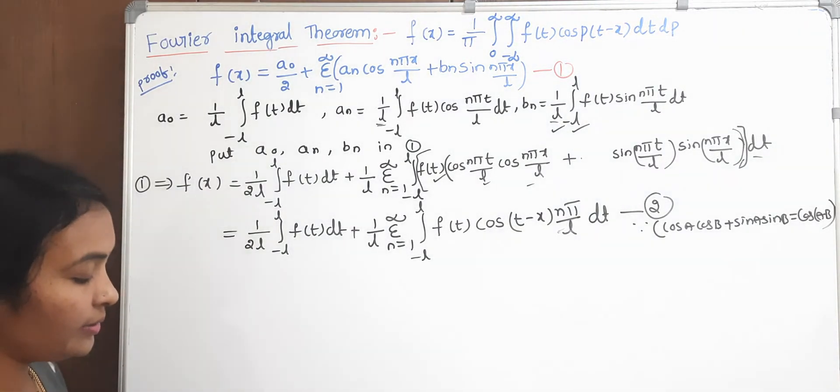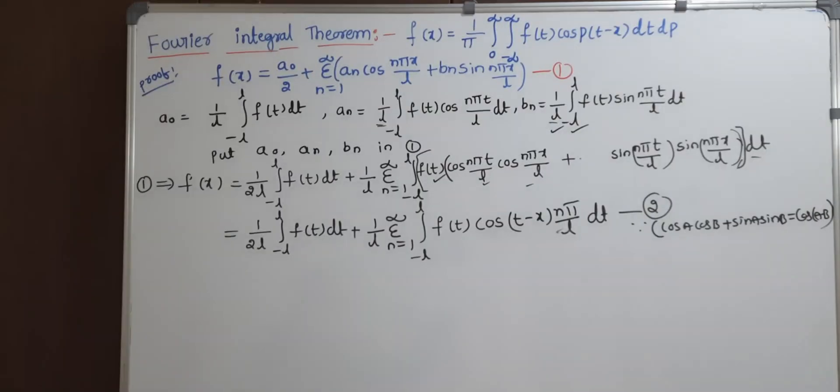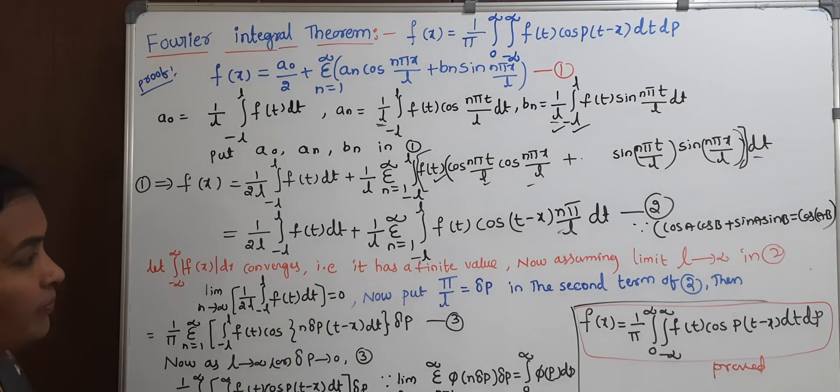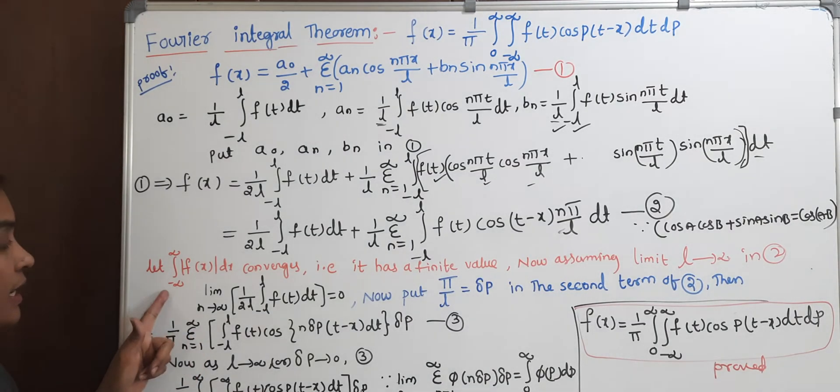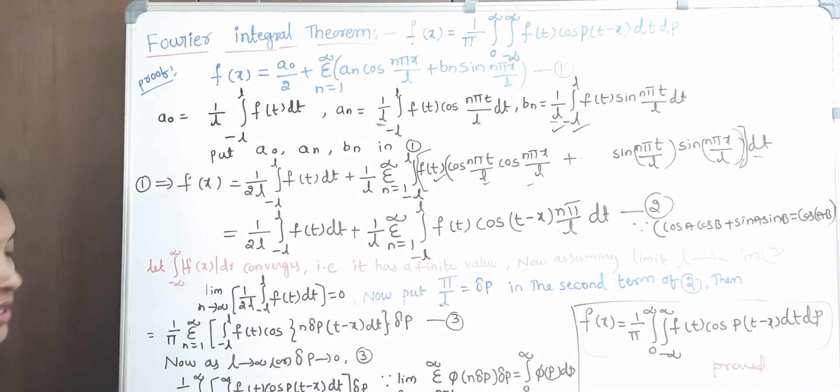If this is convergent — meaning if the integral from minus infinite to infinite of the modulus of f(x) dx is convergent, which means it has a finite value — now assume the limit l tends to infinite in equation 2. This term will go to 0. Why? Because as the limit tends to infinite, 1 by infinite becomes 0. So this term will go to 0.